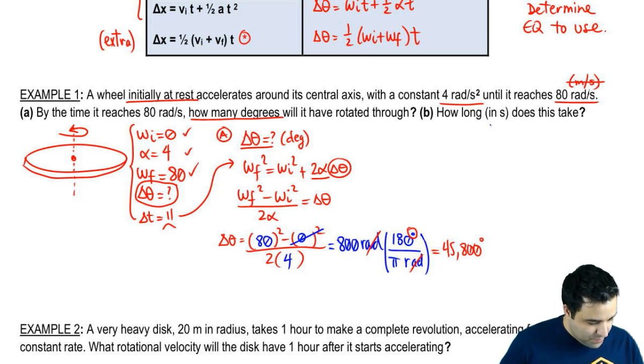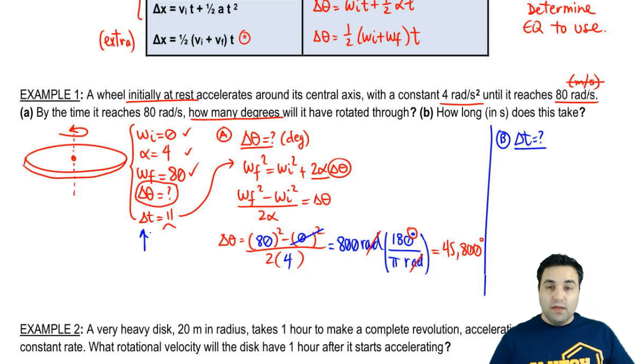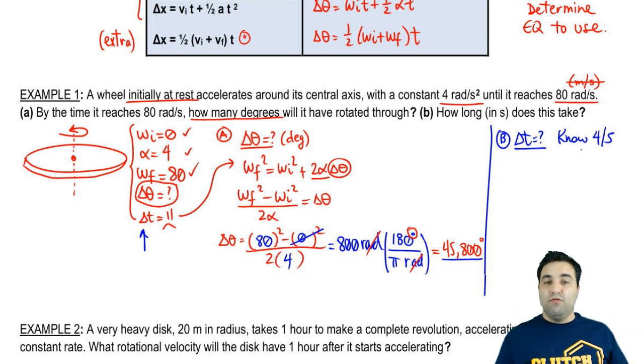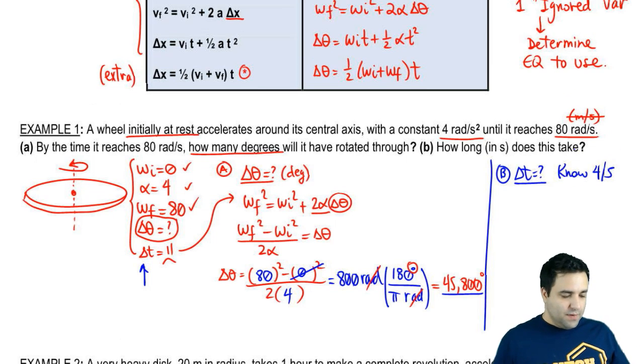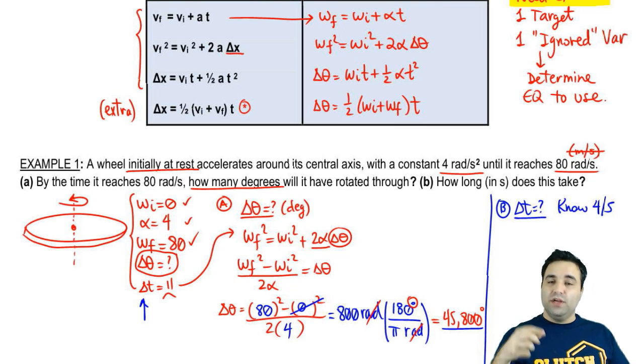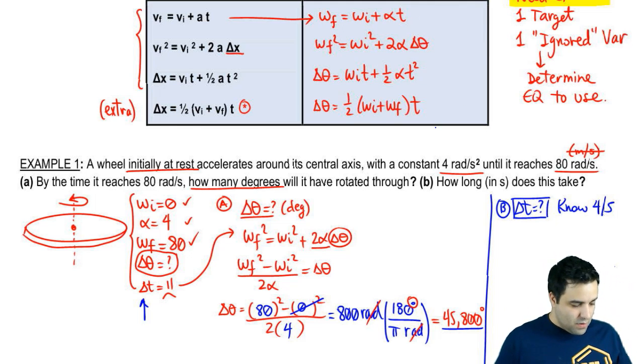For part b, it's asking how long in seconds does it take? In other words, what is our delta t? Delta t was originally my ignored variable, but now we're looking for delta t. Since it's the same situation, I can use delta theta. I actually know four out of five variables. I only needed three, but I know four. And when I know more than what I need, it means that I'm going to have more flexibility with the equations. I can use any equations that have delta t, which in this case, there's three of them.